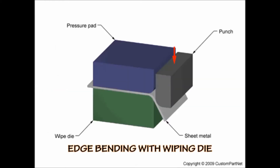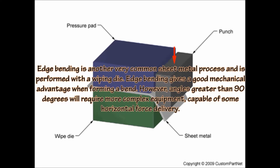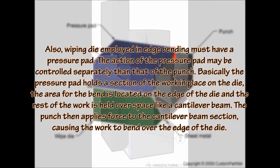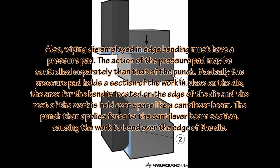Edge bending is another very common sheet metal process and is performed with the wiping die. Edge bending gives a good mechanical advantage when forming a bend; however, angles greater than 90 degrees will require more complex equipment capable of some horizontal force delivery. The wiping die employed in edge bending must have a pressure pad, whose action may be controlled separately from that of the punch. The pressure pad holds a section of the workpiece on the die, the area for the bend is located on the edge of the die, and the rest of the work is held over space like a cantilever beam. The punch then applies force to the cantilever beam section, causing the work to bend over the edge of the die.